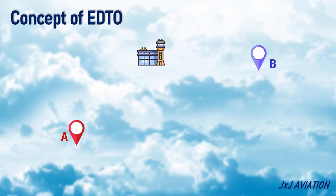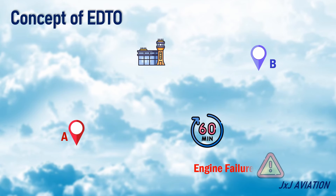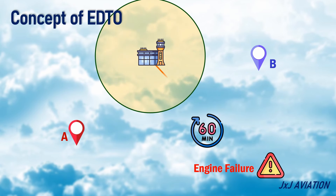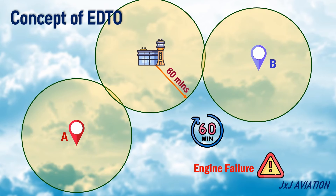Normally, the threshold time is 60 minutes. This means, for an aircraft flying from A to B, in case of any failures such as an engine failure, an en-route alternate should be available within 60 minutes. This could mean that the aircraft may have to fly a longer route to stay in the 60-minute circle of different airports.